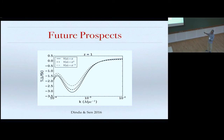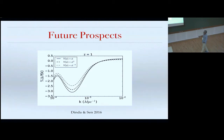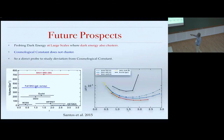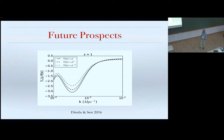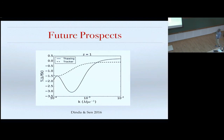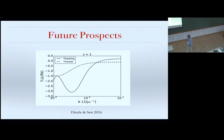Other models can give a bit more difference. We are doing these calculations now. Thawer models can have somewhat better difference from the cosmological constant compared to tracker models. So probing the power spectrum at very large scales with SKA may allow us to probe dark energy relative to the cosmological constant — a smoking gun, since Lambda doesn't fluctuate but any other dark energy does.